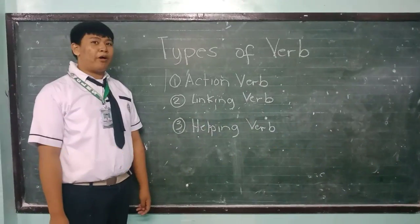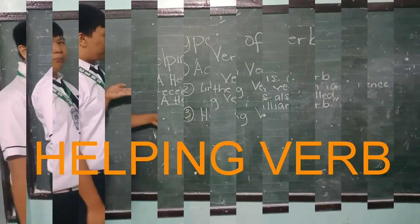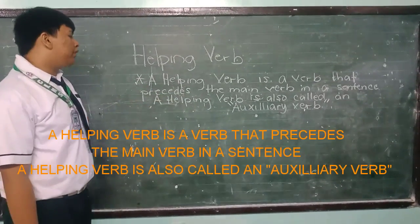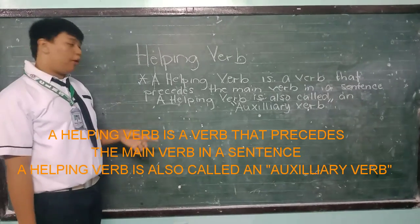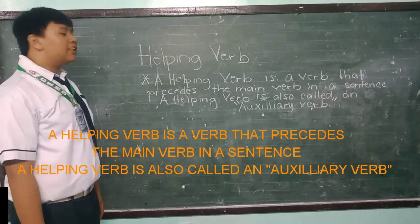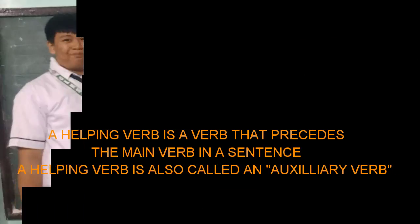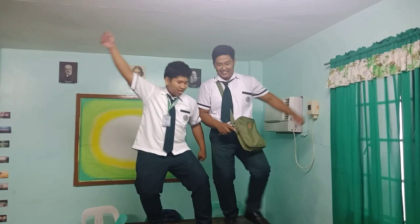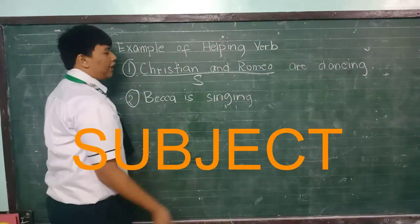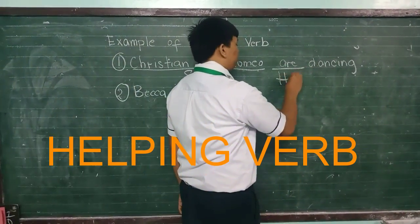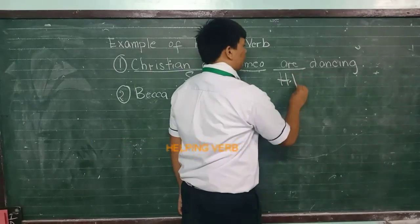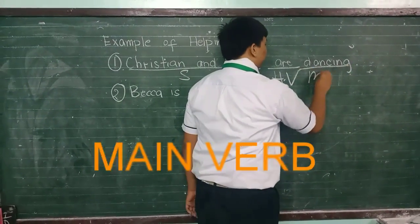The third type of verb is helping verb. A helping verb is a verb that precedes the main verb in a sentence. A helping verb is also called an auxiliary verb. In the example, are is the helping verb and the main verb follows it.